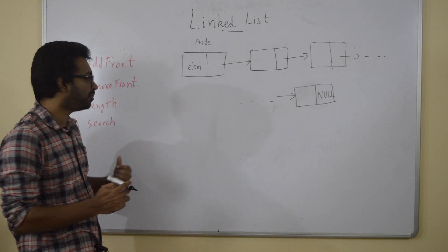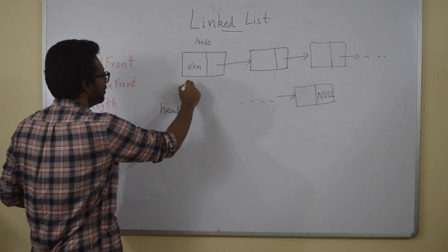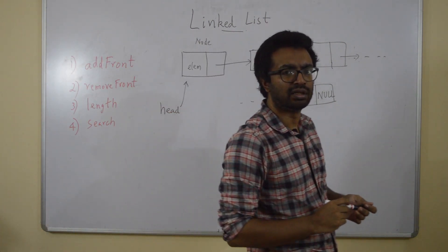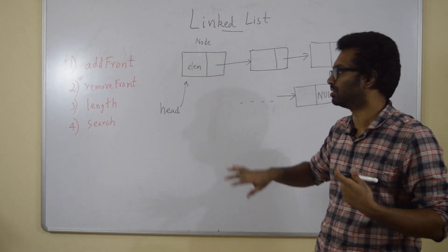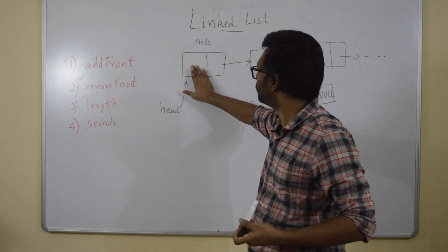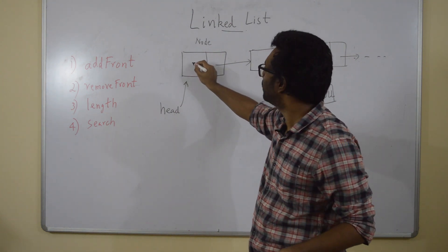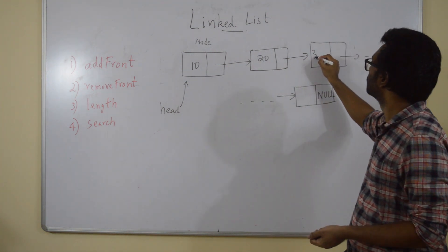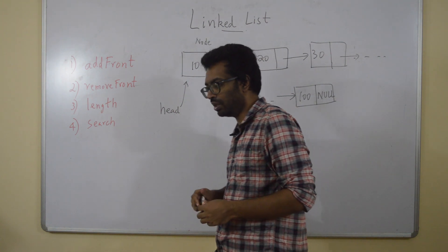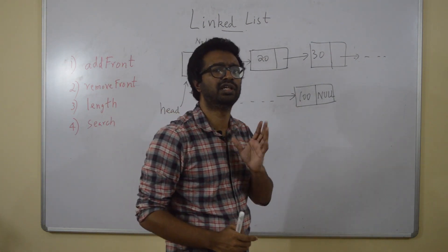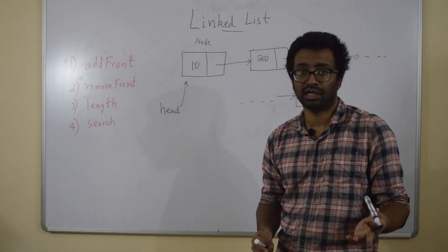There is a head pointer which points to the first node. The elements contain the numbers we are interested in, so for example, this could be 10, this could be 20, and so on. This is a pictorial representation of a linked list. Now, how do I write a node? You can do that using a class.